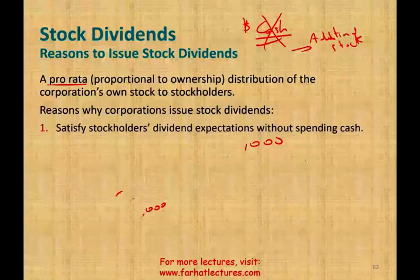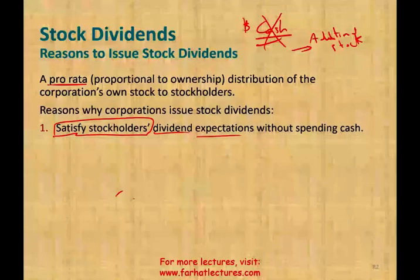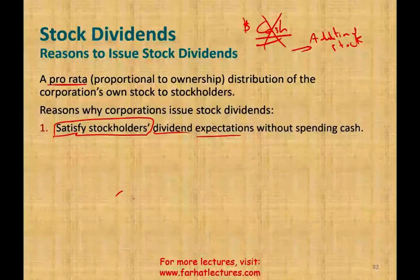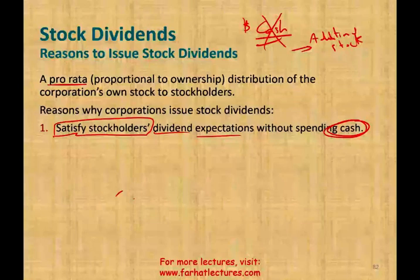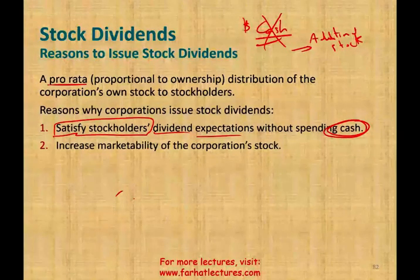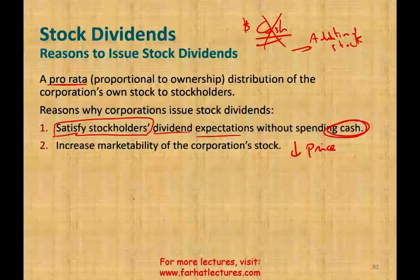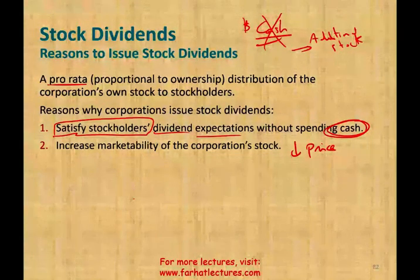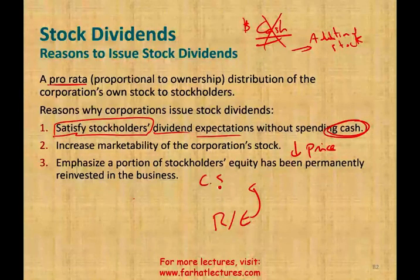Reasons why the company issues stock dividend: first, to satisfy stockholders' dividend expectation — stockholders want to receive dividends, while the company wants to preserve their cash, so they give stock dividend instead. Another reason is it increases the marketability of the corporation's stock. When you distribute new shares, the price of the stock goes down due to supply and demand, making the stock more marketable. Also, it emphasizes that a portion of stockholders' equity has been permanently reinvested in the business — basically you're taking the dividend out of retained earnings and putting it into common stock.